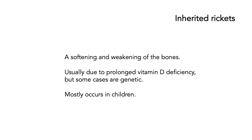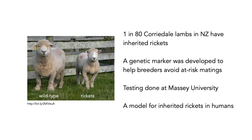Let's look at another example: inherited rickets, a softening and weakening of the bones usually caused by vitamin D deficiency, but in some cases genetic. It tends to occur mostly in children. Corridale lambs are a breed of sheep used in New Zealand, and one in 80 Corridale lambs in New Zealand have inherited rickets. The sheep on the left is wild-type and perfectly normal, while the one on the right has this inherited form of rickets. A genetic marker has been used to help breeders avoid adverse matings, and the testing is done at Massey University. This has also turned out to be a good model for inherited rickets in humans.